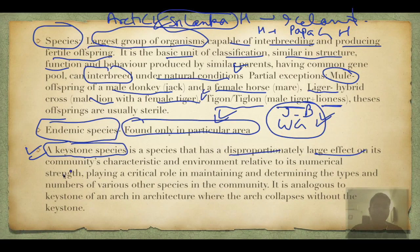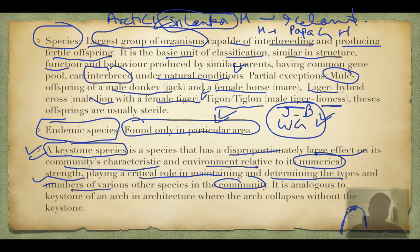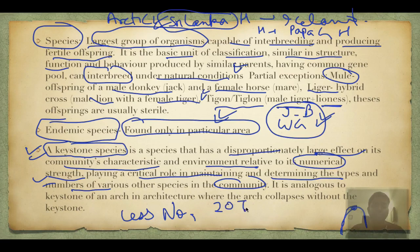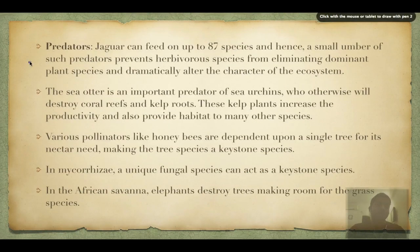Keystone species has a disproportionately large effect on its community and environment relative to its numerical strength. It plays a critical role in maintaining and determining the types and numbers of other species in the community — like the keystone of an arch, which bears the least weight but if it collapses, the entire arch collapses. For example, only 20 tigers with 2000 kg total biomass — if removed, the entire ecosystem collapses.